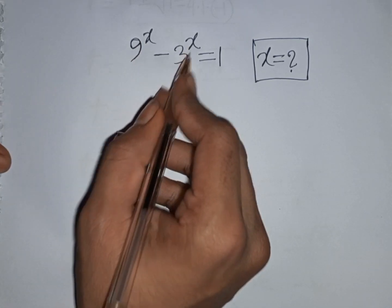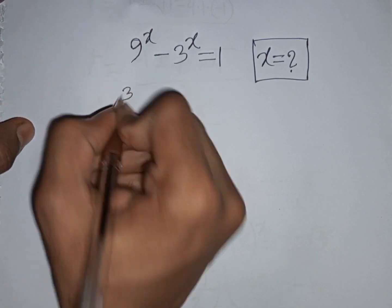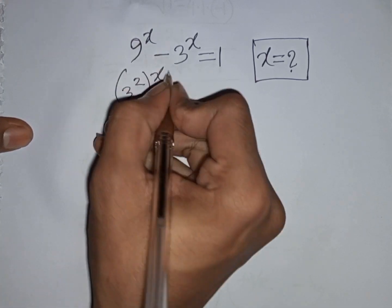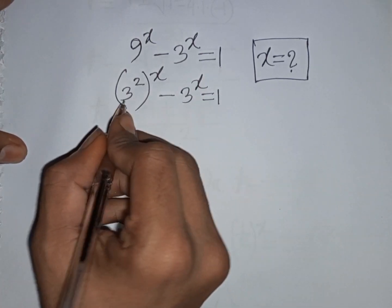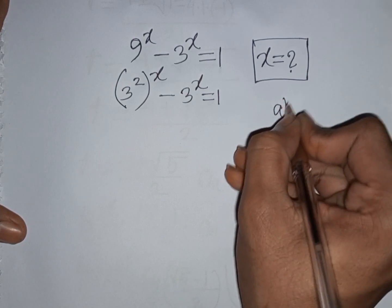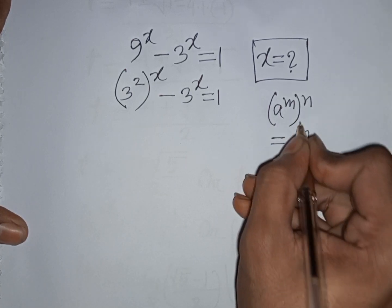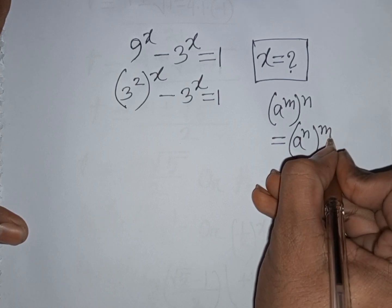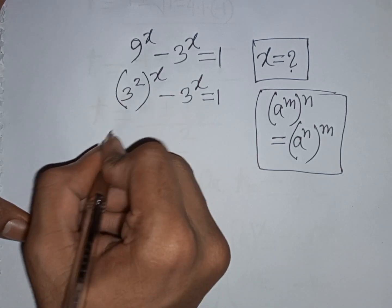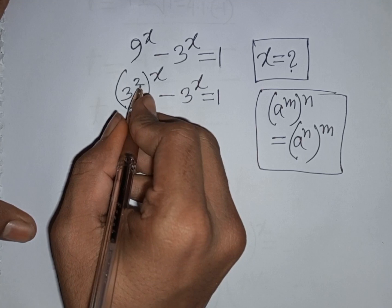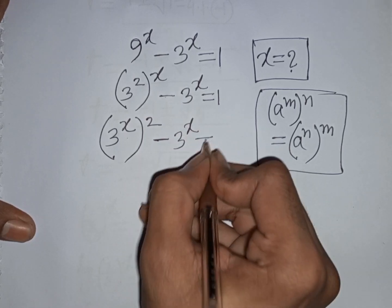How to solve 9^x minus 3^x equals 1 — find the value of x. We have 9^x, which is the same as (3^2)^x minus 3^x equals 1. Applying the exponential rule that (a^m)^n equals a^(n·m), we can write this as (3^x)^2 minus 3^x equals 1.